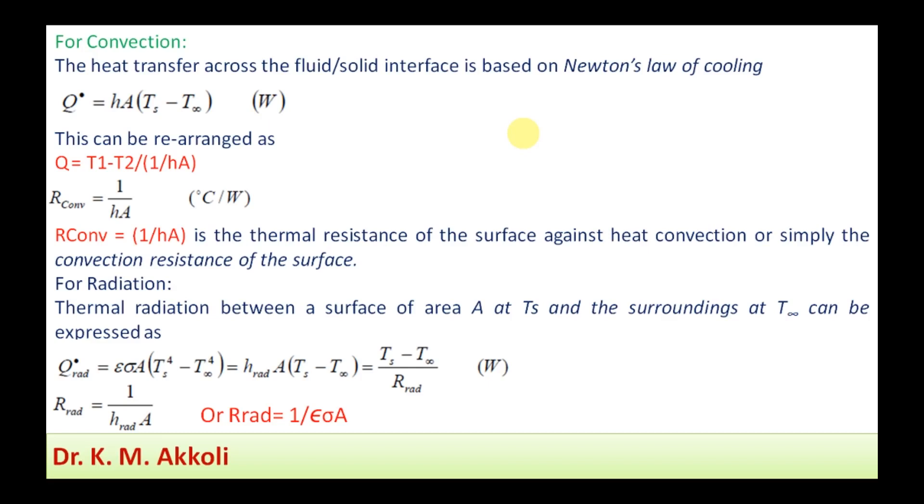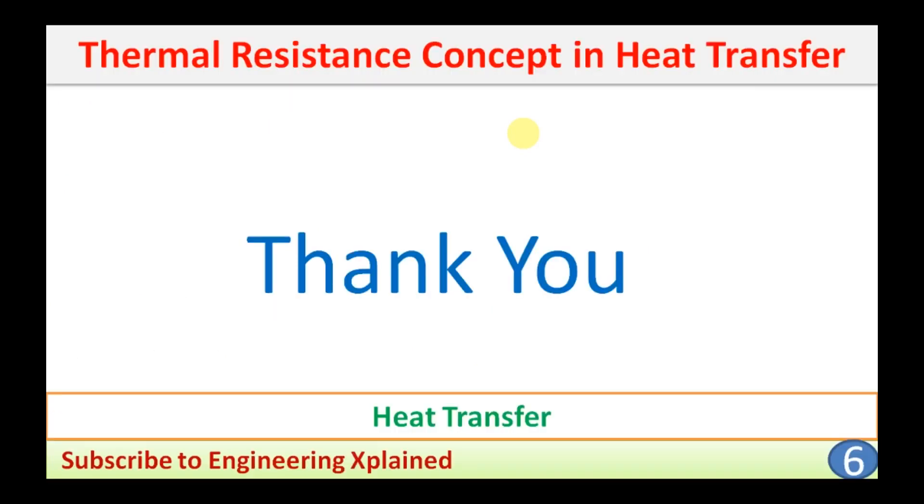The resistance offered by the material for all three modes of heat transfer — conduction, convection, and radiation — has been covered. In different cases, the resistance can be applied for composite walls and different heat transfer modes according to the particular example, which will be explained in further sessions. Thanks for watching — if you like, please share.